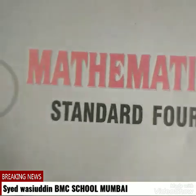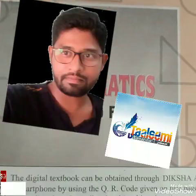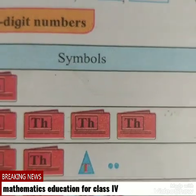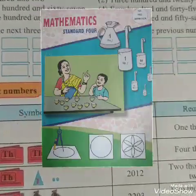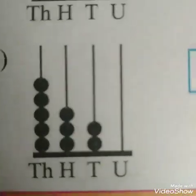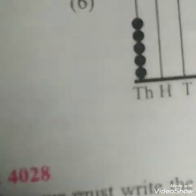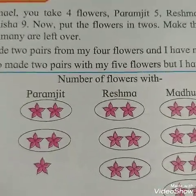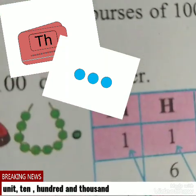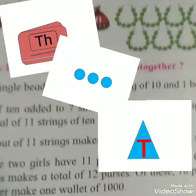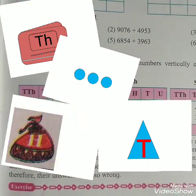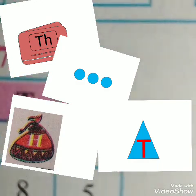Assalamu alaikum dear friends. I am Seyyad Vasyauddin and you are watching Karimi Samanda. Today we are trying to learn mathematics standard 4, unit number 2: number work. In this lesson we will discuss 4-digit numbers and the units: 10, 100, and 1000. We will also discuss their symbols, which are useful for reading 4-digit numbers.